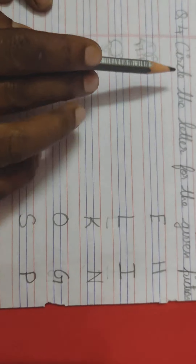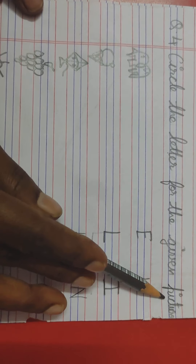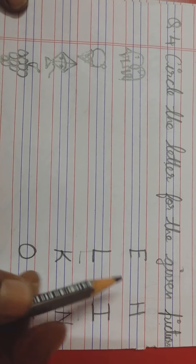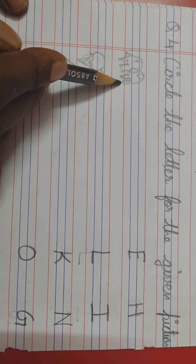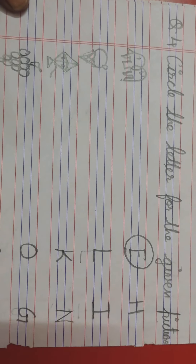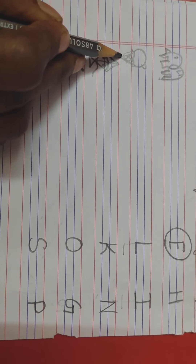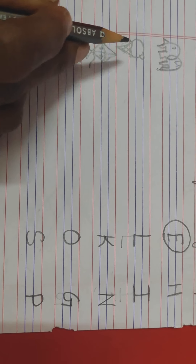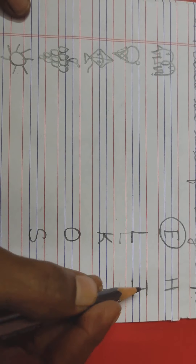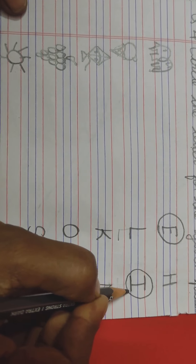Going to the next question — circle the letter for the given picture. A picture is given and you have to circle the letter which is related to that picture. Which picture is this? Elephant — E for elephant. Where is letter E? Here. You have to circle the letter E. Next, ice cream — I for ice cream. Where is letter I? This is letter I. You have to circle the letter I.